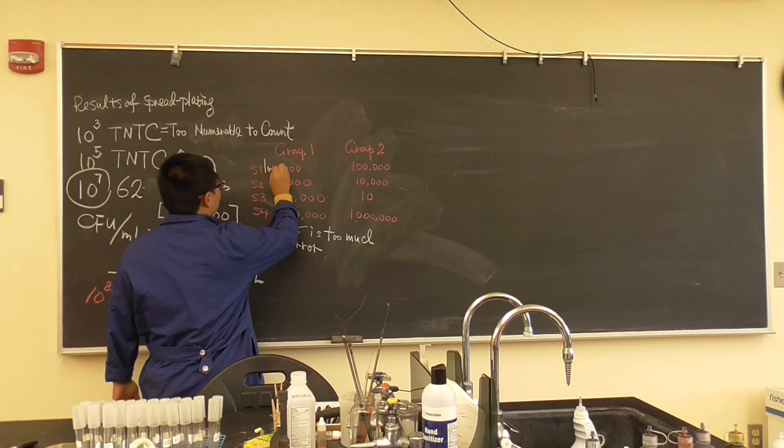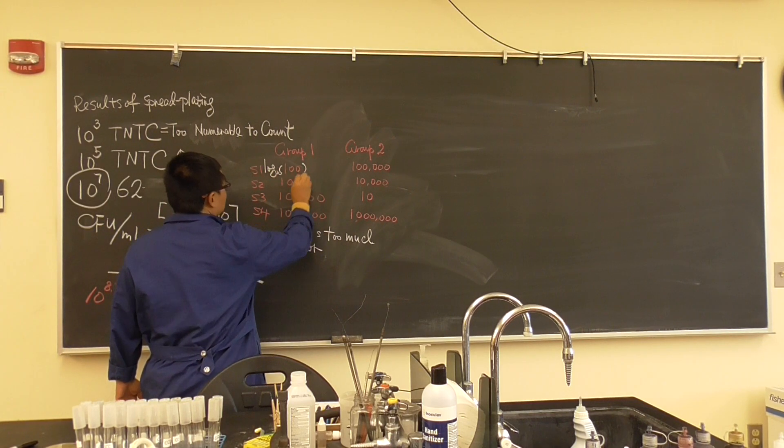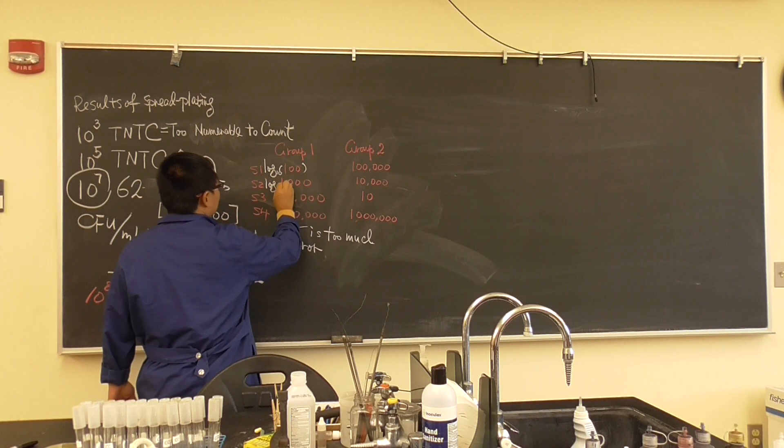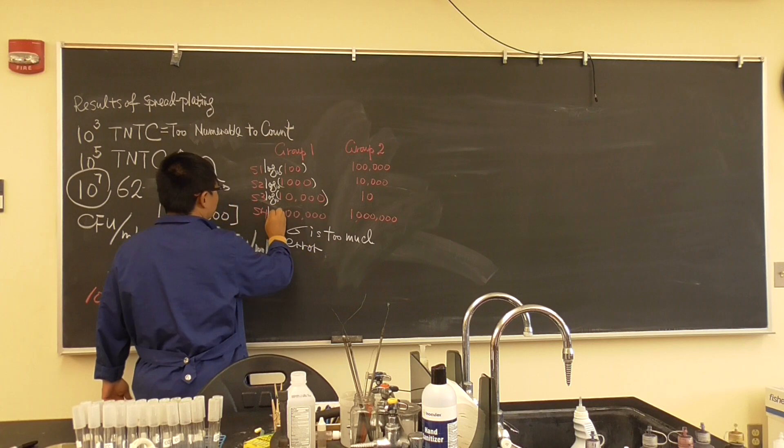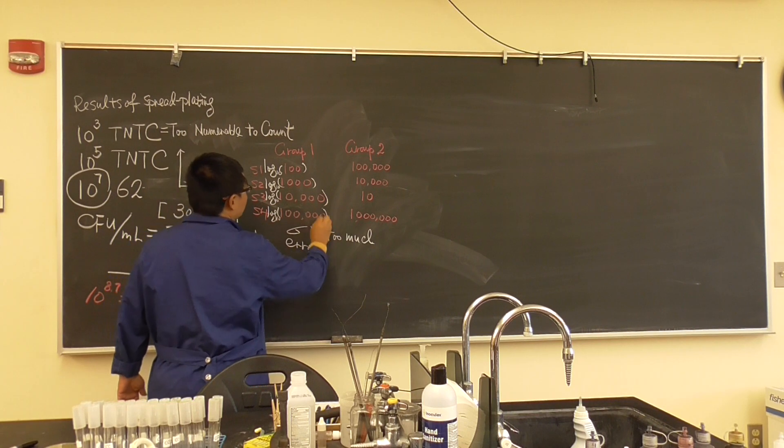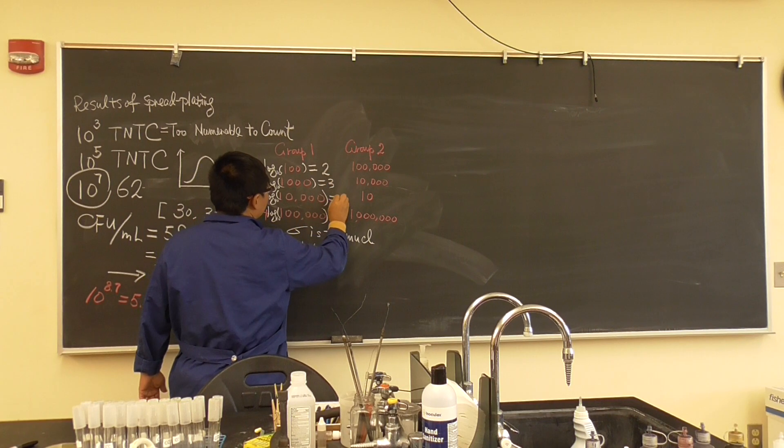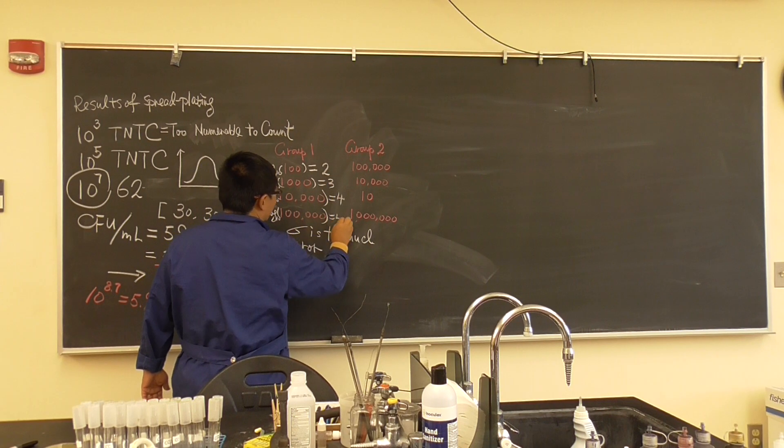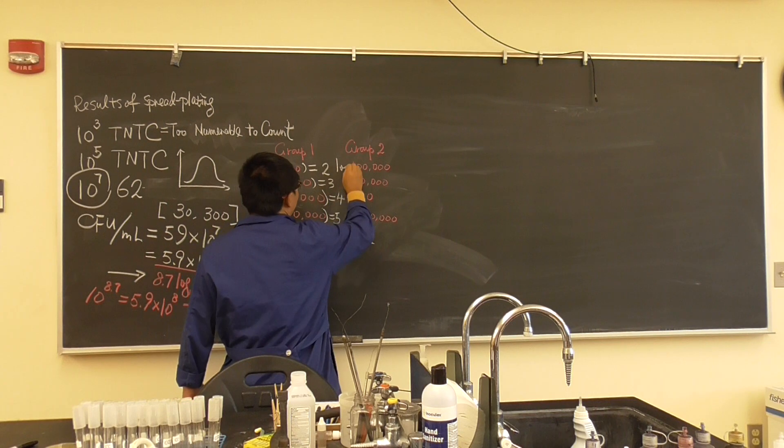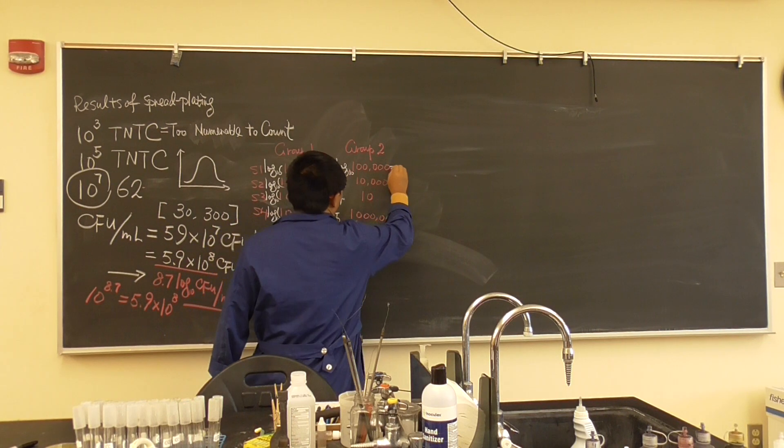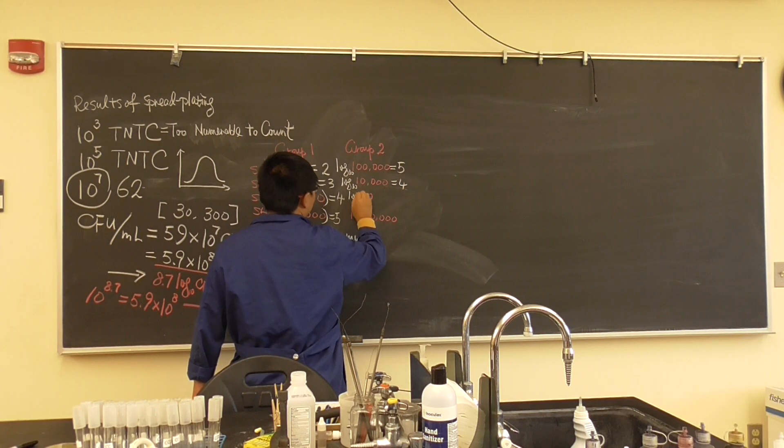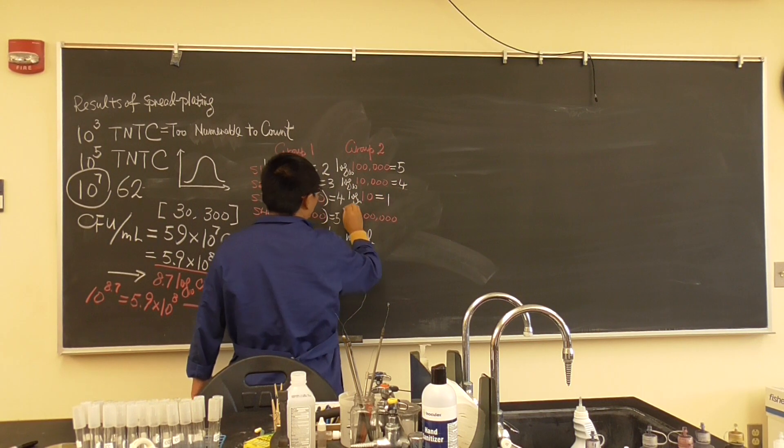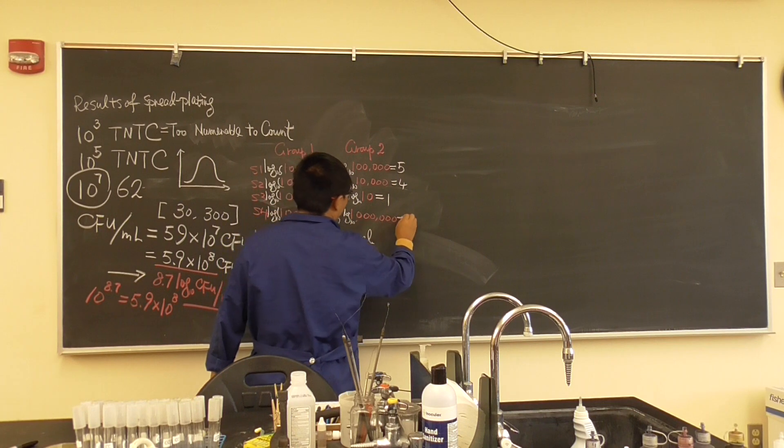So what we do? We add a log 10. We add a log 10 there, put a log 10. Then what does it become? This becomes 2, this becomes 3, this becomes 4, this becomes 5 log 10. This becomes 5 log 10, this becomes 4. We add a log 10, this becomes 1. We add a log 10, this becomes 1, this becomes 6.